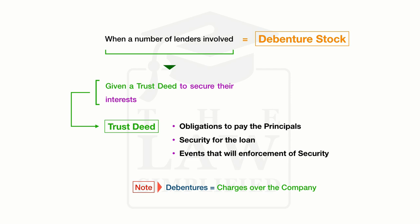When we look at the way in which a debenture functions and the safeguards afforded to any secured creditor, it gives rise to a trust deed which secures those interests. Much like any other trust instrument, the trust deed created in relation to a debenture provides the obligations to pay the principal, as well as providing security for the loan itself in case something were to happen. By and large, you could consider debentures as charges over a company — which may be familiar if you have already studied subjects such as the law of trust and property law.